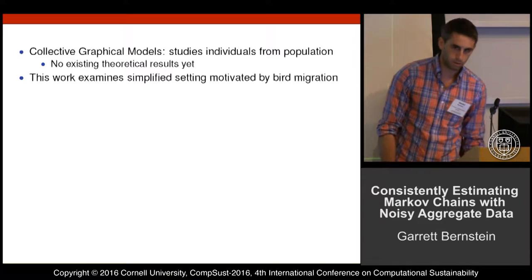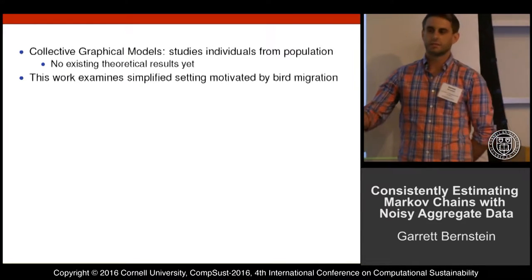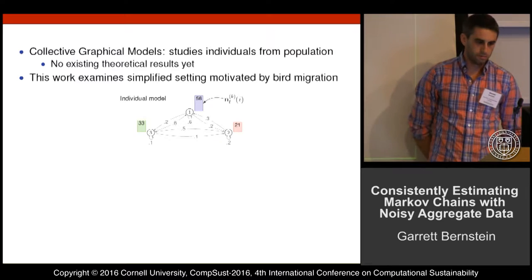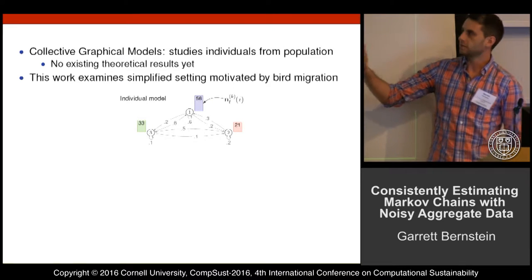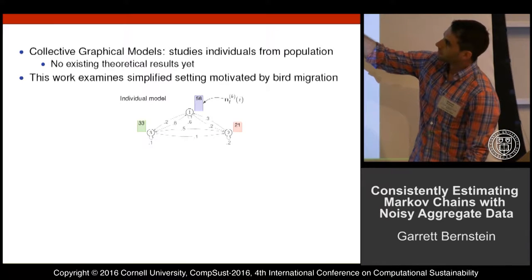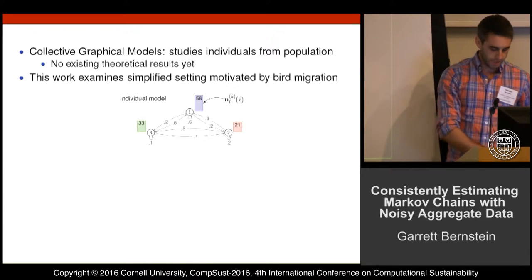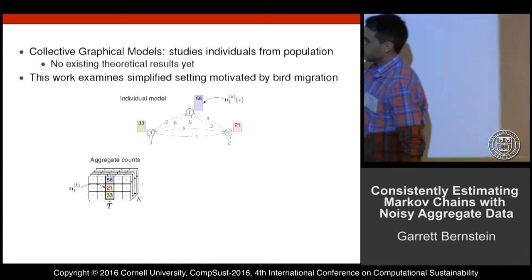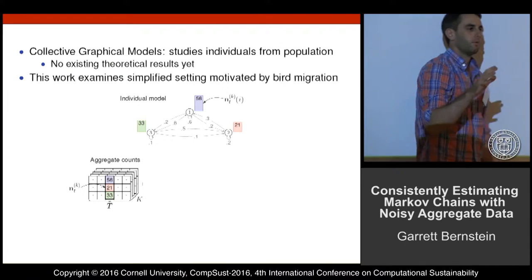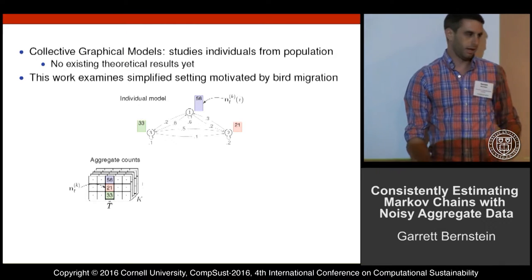This work, presented at AI Stats recently, looks at a simplified setting motivated by bird migration where we can get theoretical results. You can imagine all the birds are following the same individual model — in this case a simple Markov chain — with shared transition probabilities. These can be aggregated into actual counts over some number of concepts and populations, and from these aggregate counts we want to learn the transition probabilities back in the individual model.